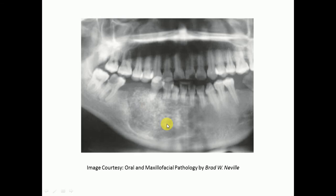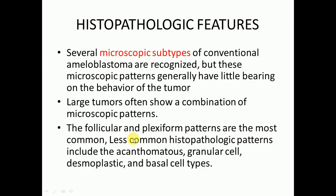Regarding histopathological features, there are several microscopic subtypes of conventional ameloblastoma, but these microscopic patterns generally have little bearing on the behavior of the tumor. Large tumors often show a combination of microscopic patterns. The follicular and plexiform patterns are the most common. Less common histopathological patterns include the acanthomatous, granular cell, desmoplastic, and basal cell types.